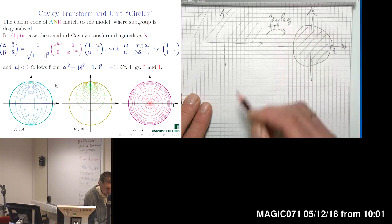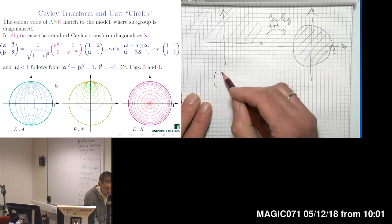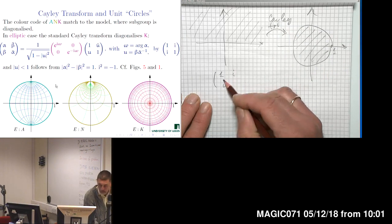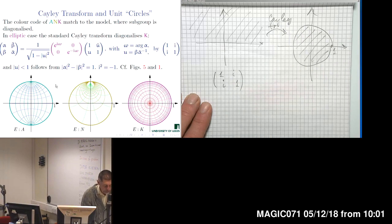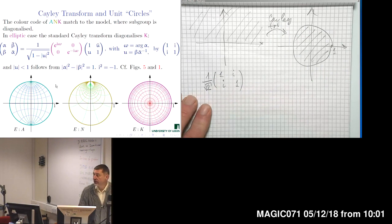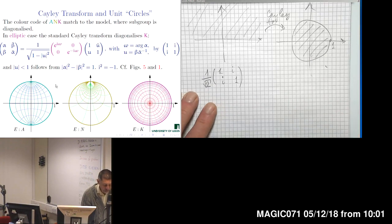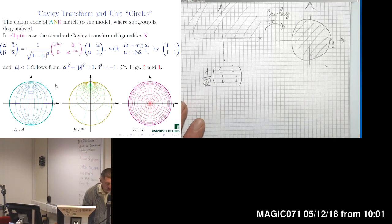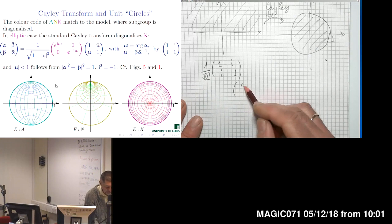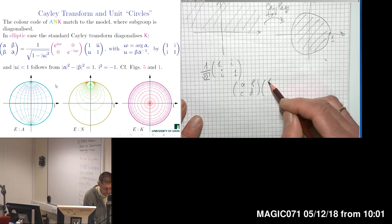The Cayley transform is given by matrix conjugation with the matrix of the form (1, i; 1, -i). We may want to normalize this matrix to have determinant equal to 1 by dividing by the square root of 2, but in most cases for simplicity I will omit that factor. Having such a matrix, we make matrix conjugation for elements of our group SL(2,R), which has the form (a,b;c,d) with real numbers, by this Cayley transform matrix.